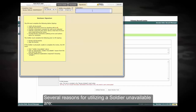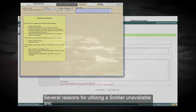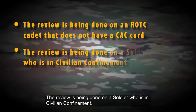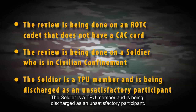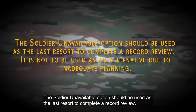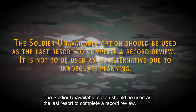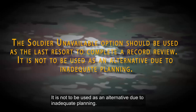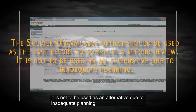Several reasons for utilizing soldier unavailable are: the review is being done on an ROTC cadet that does not have a CAC card; the review is being done on a soldier who is in civilian confinement; or the soldier is a TPU member and is being discharged as an unsatisfactory participant. The soldier unavailable option should be used as a last resort to complete the record review. It is not to be used as an alternative due to inadequate planning.